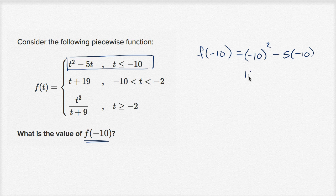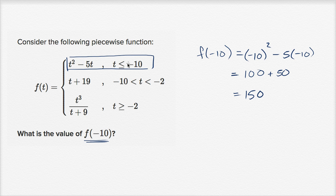So let's see, -10 squared, that's positive 100. And then subtracting 5 times -10, this is going to be subtracting -50, or you're going to add 50. So this is going to be equal to 150. f(-10) is 150, because we use this case up here, because t is -10.